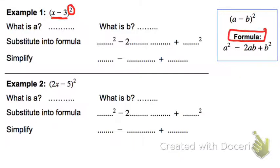So the first step is to identify what the a is and what the b is. The a is always the first number, so in this case it's x, and the b is the number that's being subtracted from it, so 3.